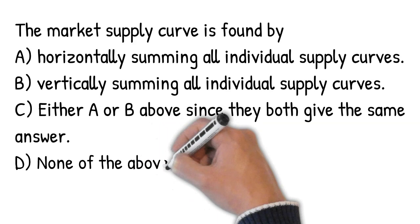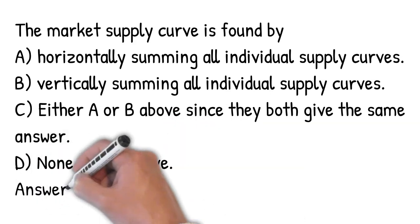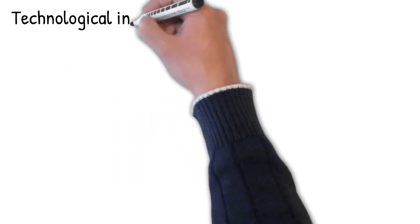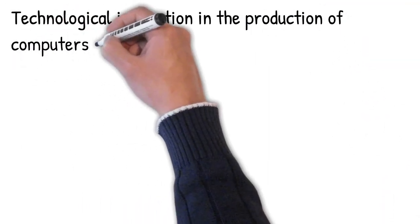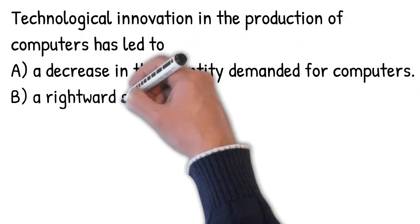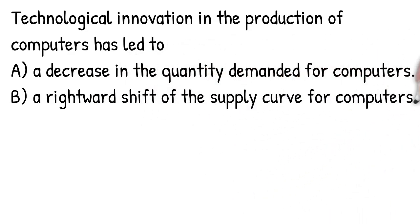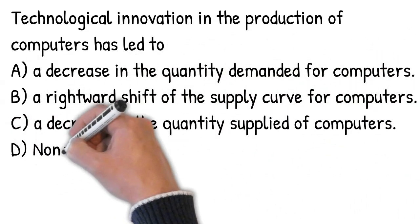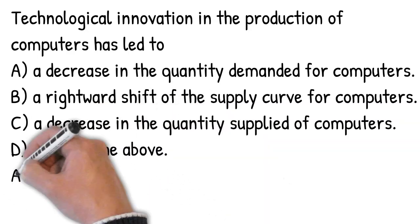The market supply is also a horizontal sum of the individual supply. Technological innovation shifts the supply curve to the right. For any given price, the quantity supplied increases.